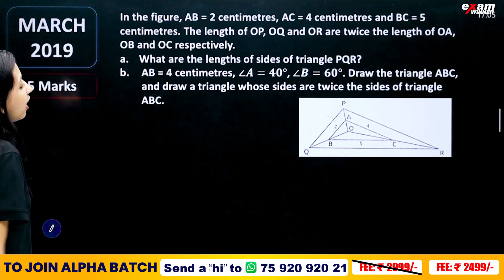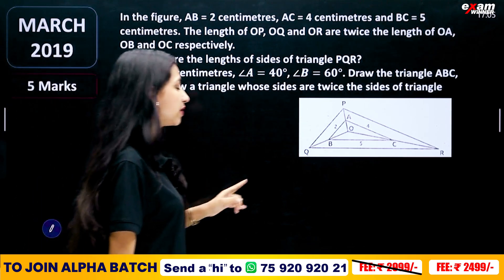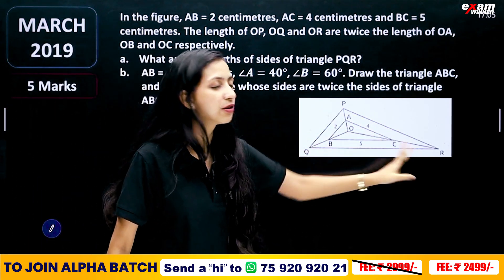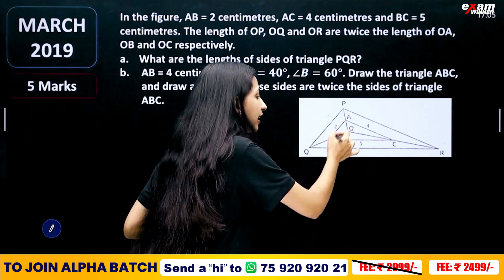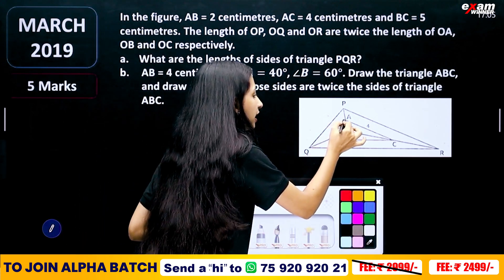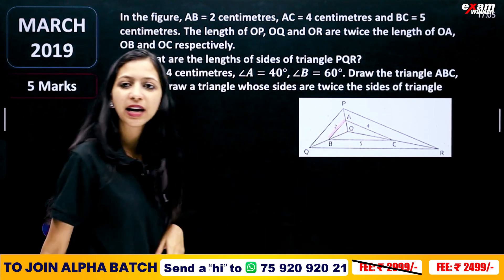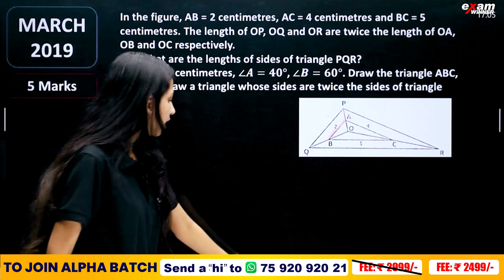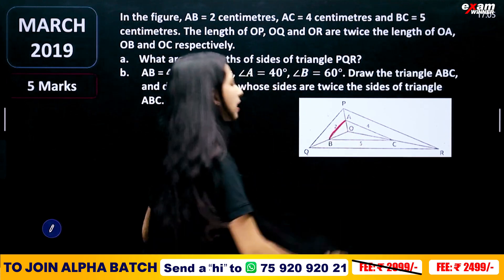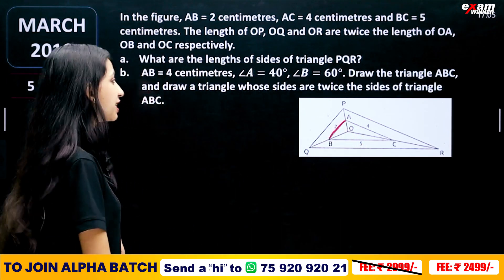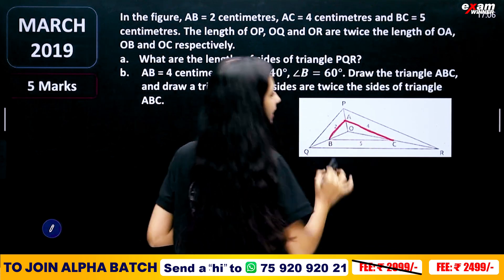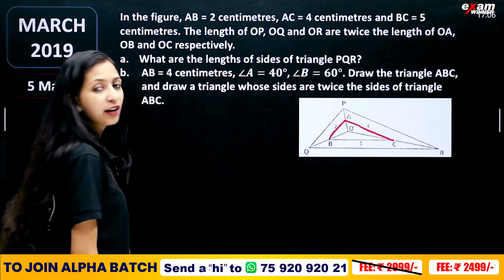This figure shows a triangle. It is one triangle and another triangle. AB is 2cm. AC is 4cm.